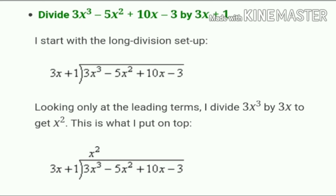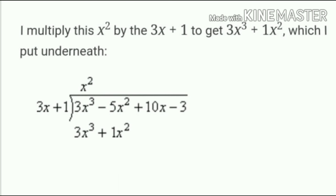We follow the same steps as simple division. Now, x² is multiplied by the divisor 3x + 1. Multiplying x² by 3x + 1 gives 3x³ + x². This result is placed underneath the dividend.